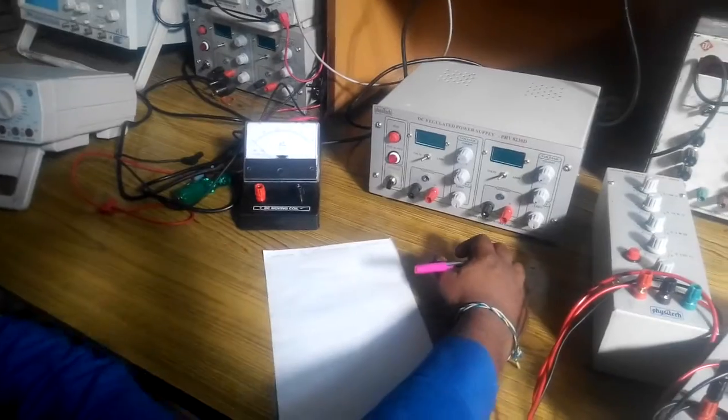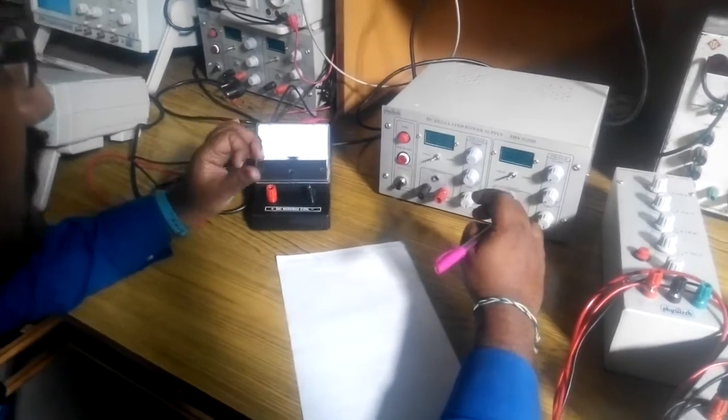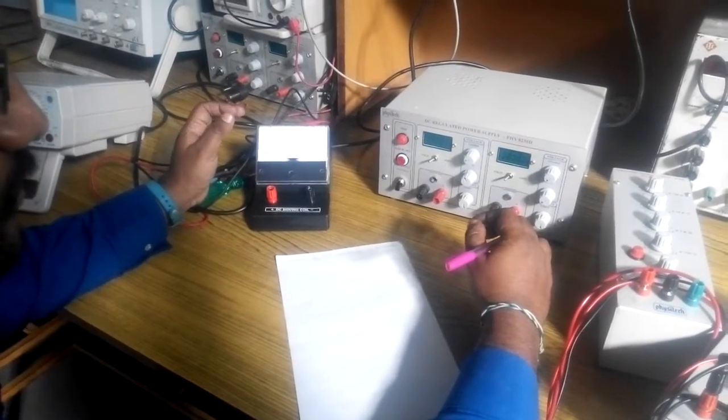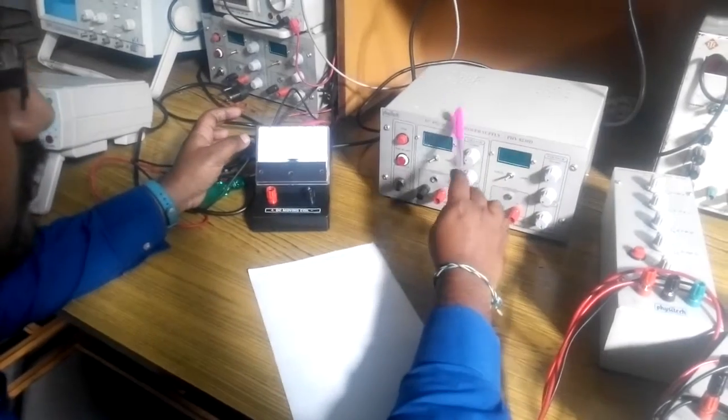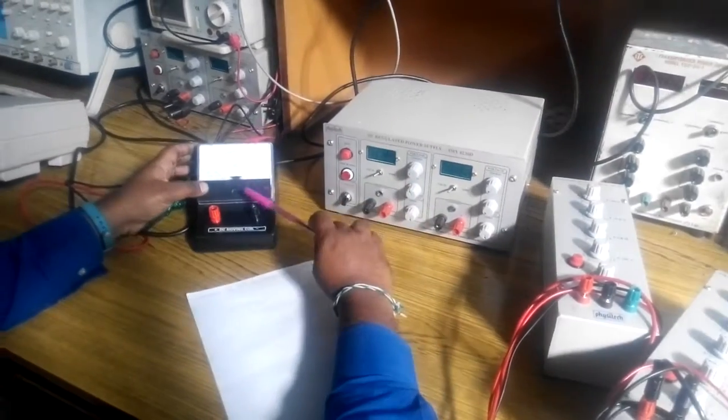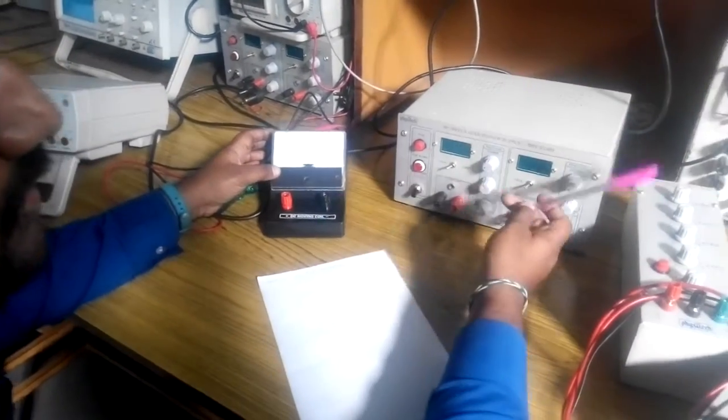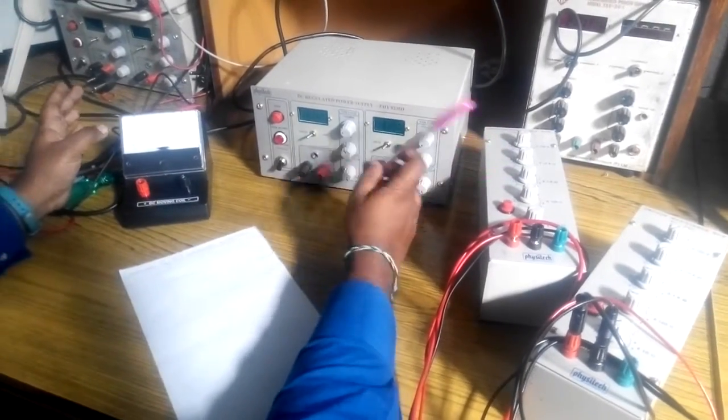Conversion of D'Arsonval galvanometer to DC voltmeter. For converting D'Arsonval galvanometer to DC voltmeter, you need a regulated power supply, you need a galvanometer, and you need a decade resistance box.